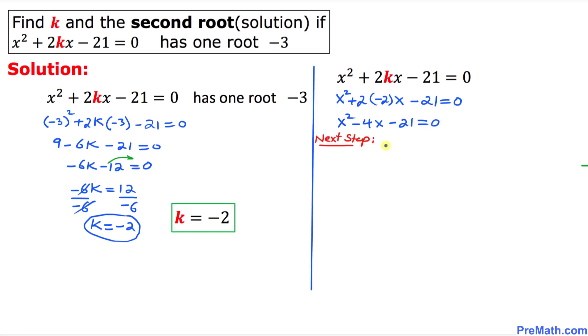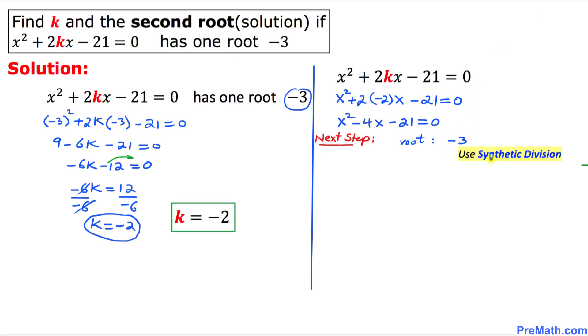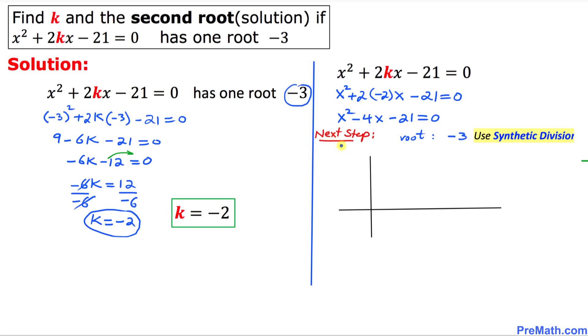And in the next step we know that one of our root is negative 3, so we are going to use synthetic division. That is one of the easiest methods we can do. And now let me show you how to use the synthetic division.